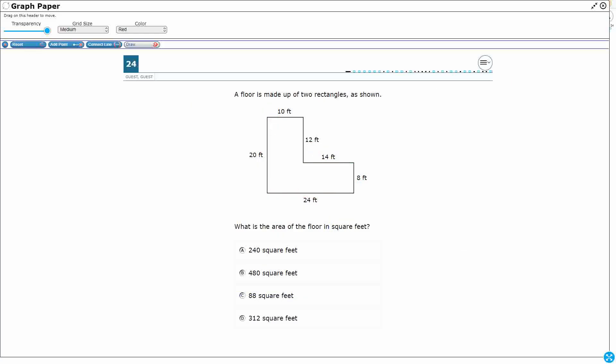Now watch, I can cut this a different way if I really wanted to. What if I did it this way? I get two different rectangles. Now it's a 10 by 20, so 10 by 20 equals 200 square feet. And then this one is, I'm not using 24 now, it's a 14 by 8. So 14 by 8 is going to be 112 square feet.